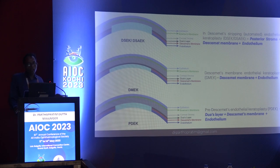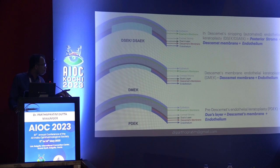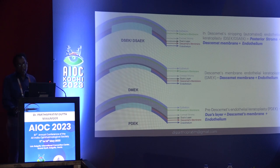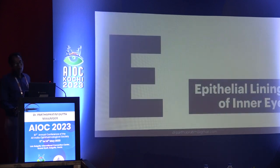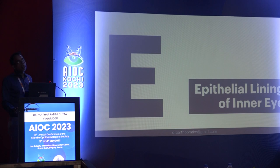In DSEK — Descemet's stripping endothelial keratoplasty — the layers involved are the posterior stroma, Descemet's membrane, and endothelium.